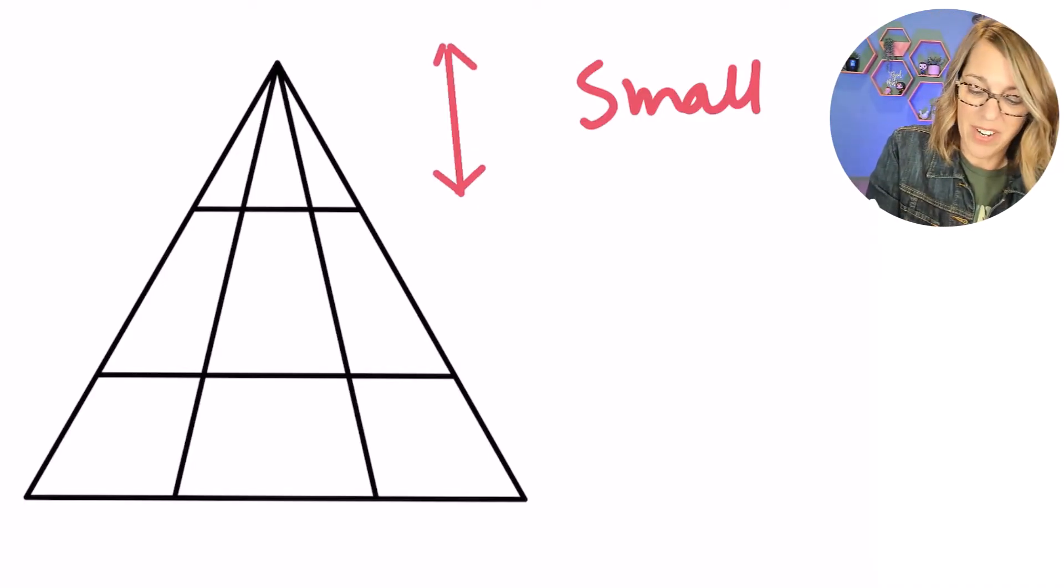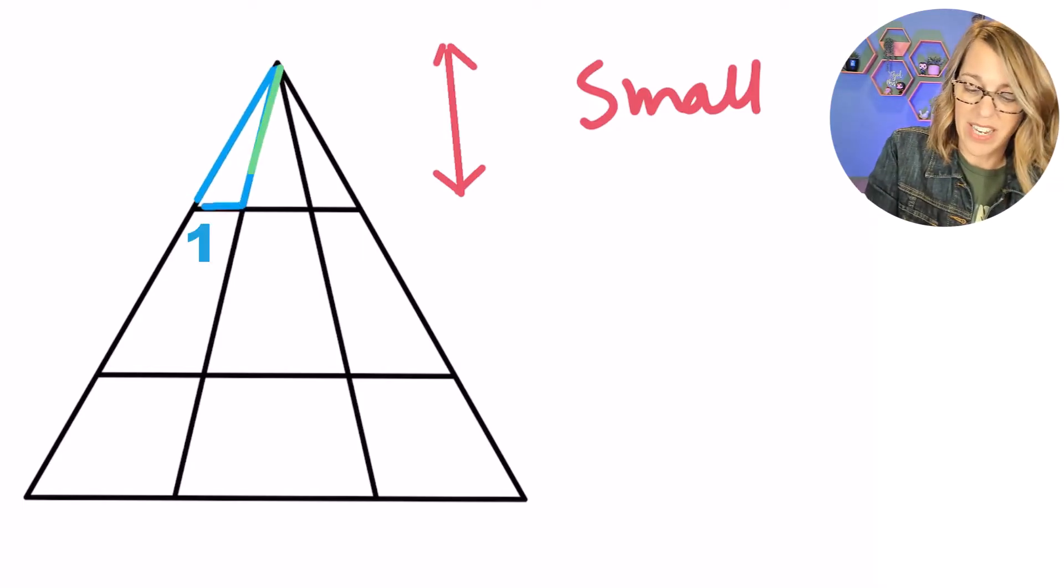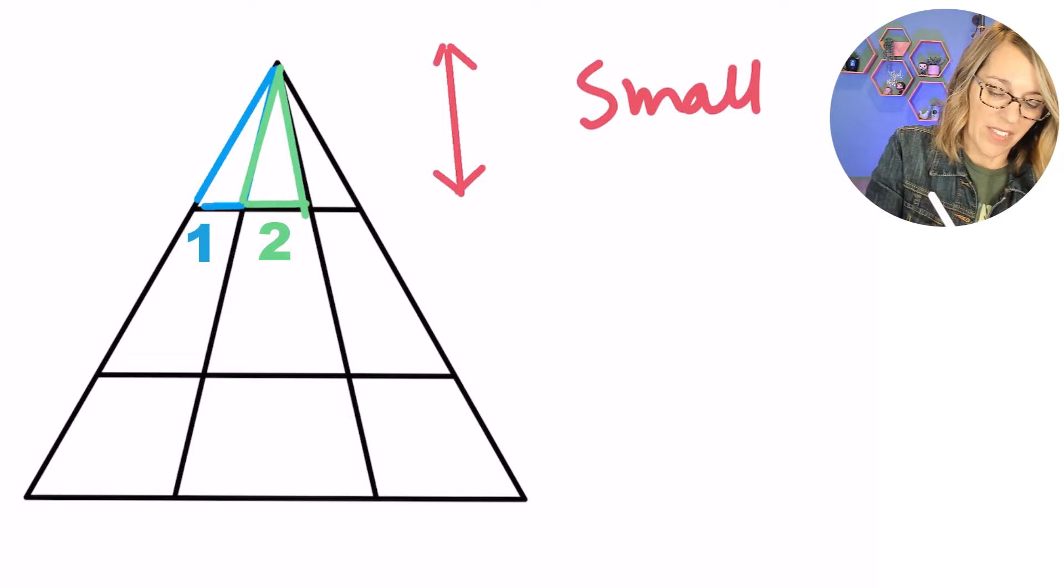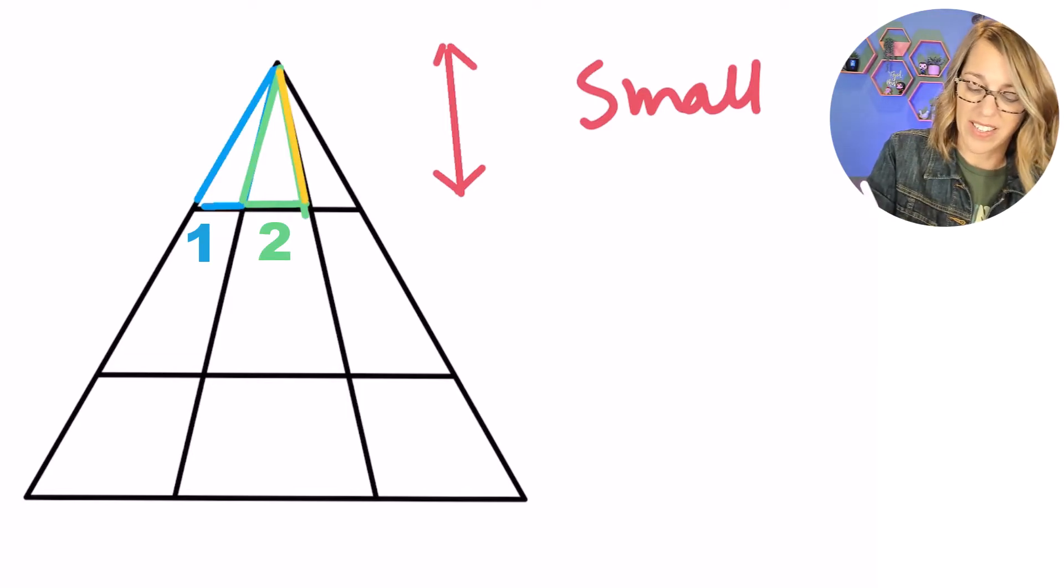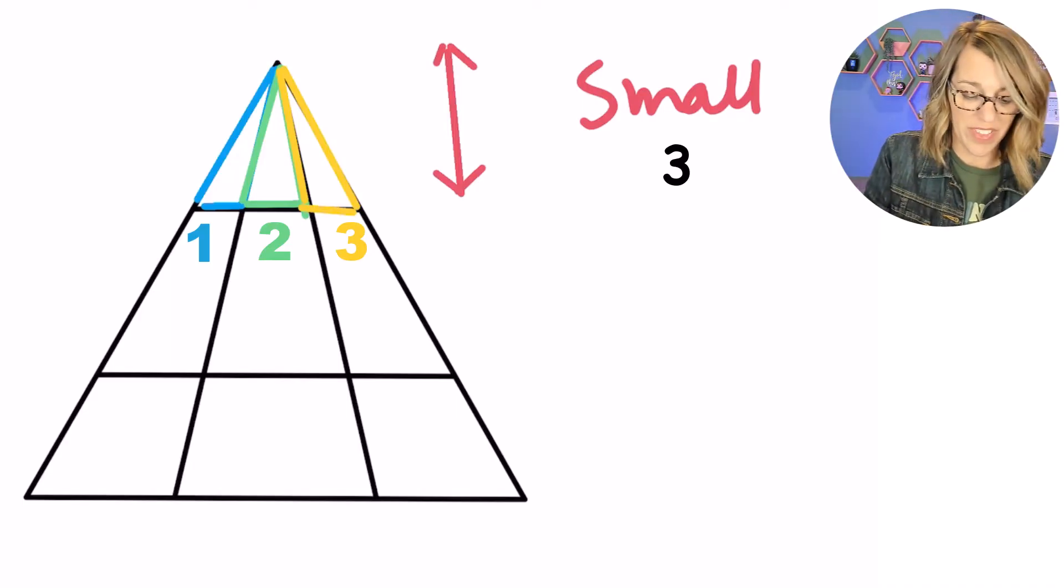Let's count these up starting with the left, and then I've got one in the middle and a third triangle on the right-hand side. That gives us three so far, but there are more with this height.